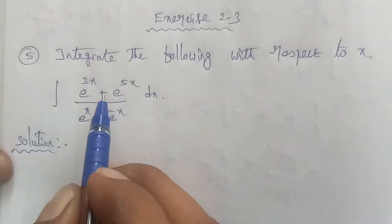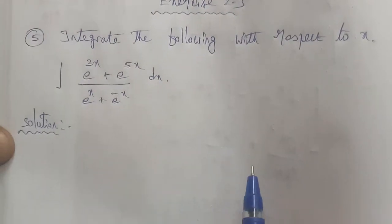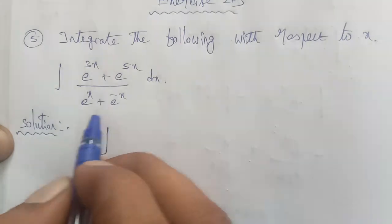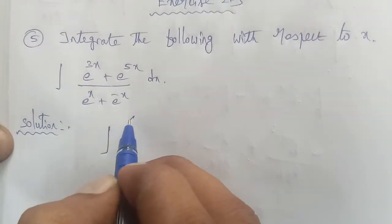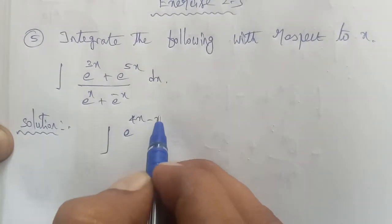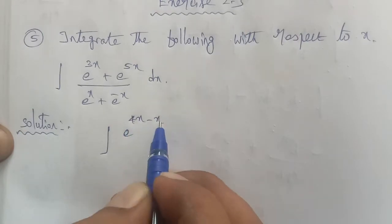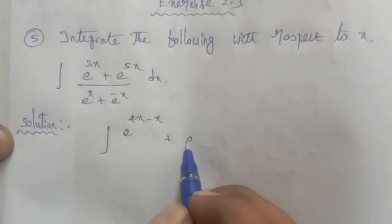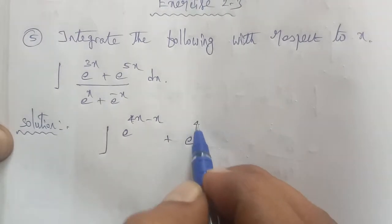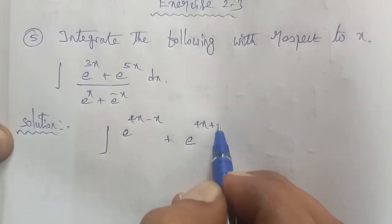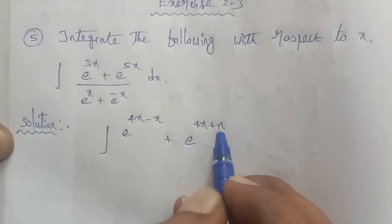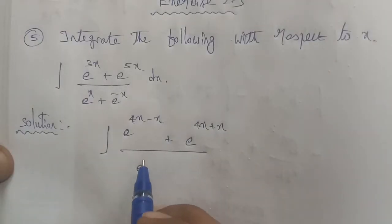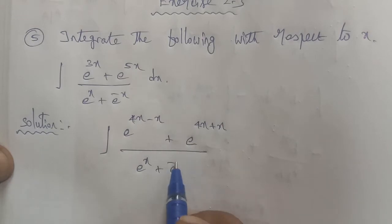So this is a little rearrangement. First of all, integration of e power 3x — we can write this as e power (4x minus x), so e power (4x minus x) is e power 3x. Next, e power 5x can be written as e power (4x plus x). The denominator is e power x plus e power minus x, into dx.